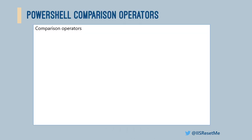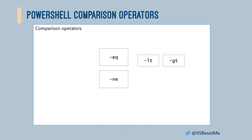First things first — comparison operators in PowerShell. What is available out of the box? We have the -eq and -ne operators, equals and not equals, which test for simple equality. We can figure out whether a number has the same value as another number or not. We also have -lt and -gt for less than and greater than, and then a set of non-strict variants: less than or equal and greater than or equal.